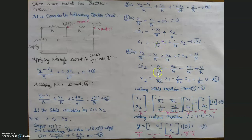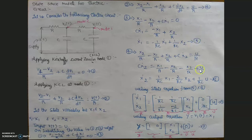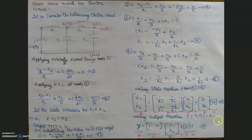We take x1-dot and x2-dot on the left-hand side to obtain the state equations in the standard format: x-dot equals Ax plus Bu. Converting equations 5 and 6 into matrix form, we substitute the coefficients of x1-dot and x2-dot accordingly. There is no u term in equation 5, so we take it as 0. The output equation has v1(t) = x1, so it is written as y = [1  0] [x1; x2] + [0] u.